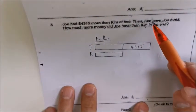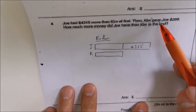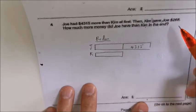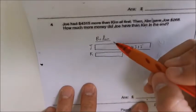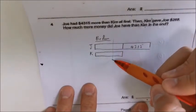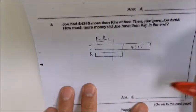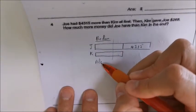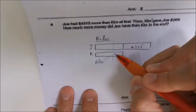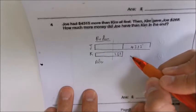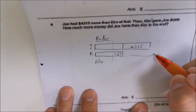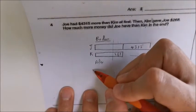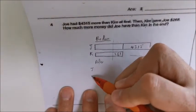Kim gave Joe two hundred and sixty eight dollars, so where is the two hundred and sixty eight dollars? It should be somewhere here. This is after — the two hundred and sixty eight is going to come here.